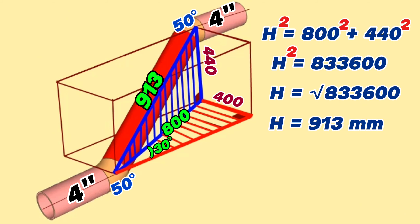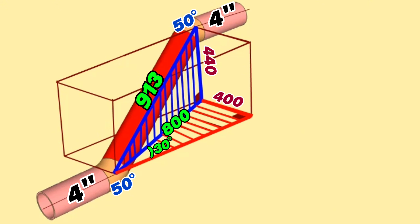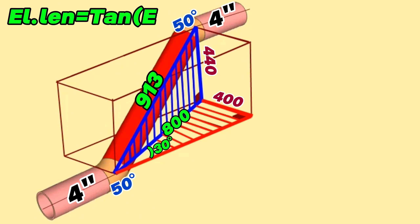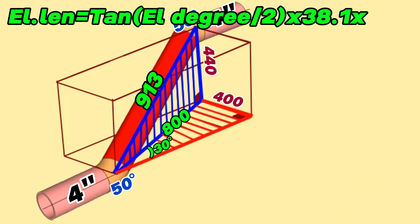Now let's calculate the 50-degree cut elbow lengths. There are different ways to find cut elbow length; we will use a simple formula. The formula for calculating center-to-end distance of such cut elbows is as follows: elbow length equals tangent of (elbow degree divided by 2), multiplied by 38.1, multiplied by the nominal pipe size of the elbow (NPS).